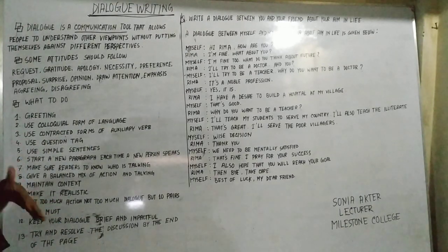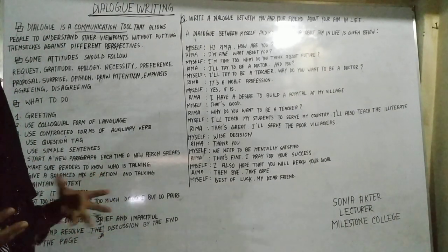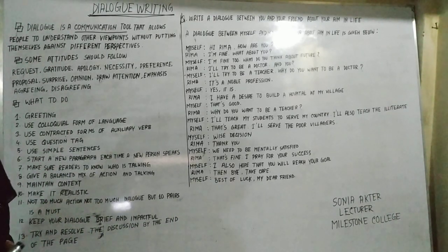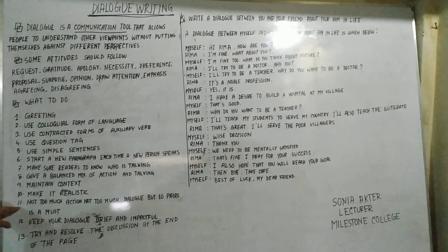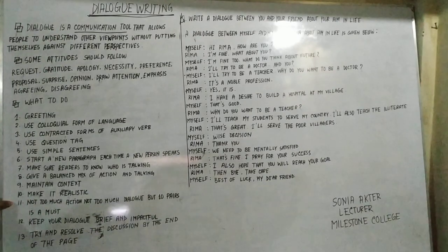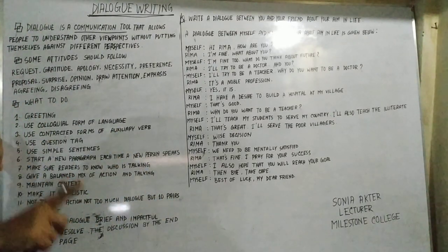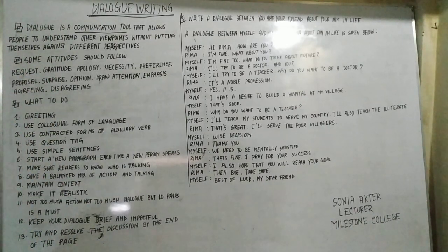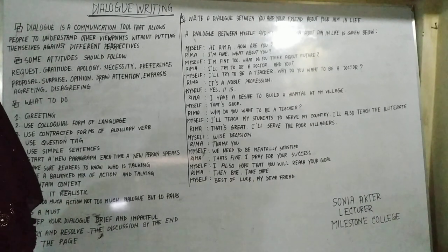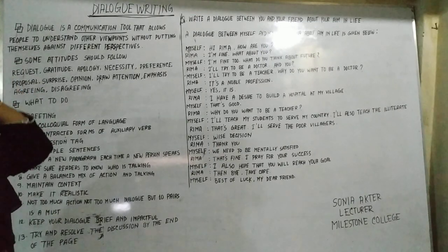Then make it realistic — you should not use strange or irrelevant things about any idea. When you write about any topic, make it realistic; you cannot use anything that is not related. Not too much action, not too much dialogue — but 10 pairs is a must. You should follow strictly that you write at least 10 pairs. You cannot complete your dialogue by writing 5 pairs or 7 pairs. You should write at least 10 pairs — that is the minimum requirement.